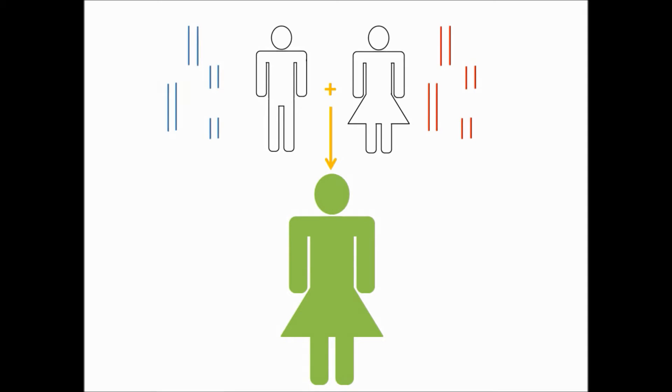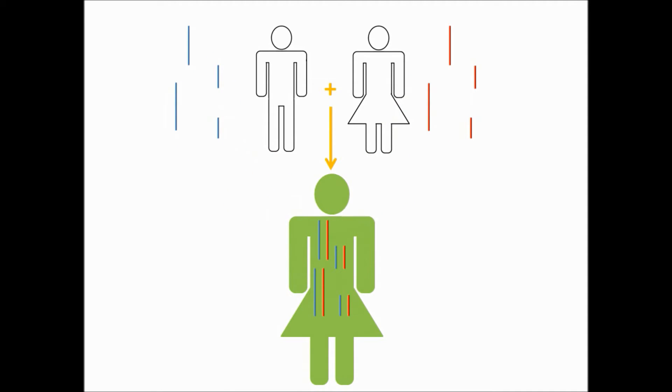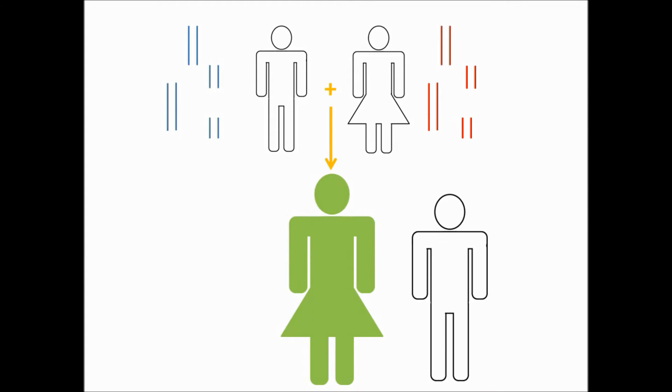In the context of family, you received half of your genes from your mother and the other half from your father. Therefore, you have a relatedness of 0.5 to each of them.